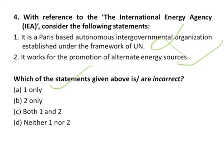The IEA was initially dedicated to responding to physical disruptions in the supply of oil as well as serving as an information source on statistics about the international oil market and other energy sectors. The agency's mandate has broadened to focus on energy security, economic development and environmental protection. The IEA has a broad role in promoting alternative energy sources including renewable energy, rational energy policies and multinational energy technology cooperation.